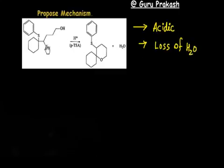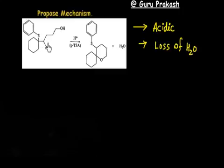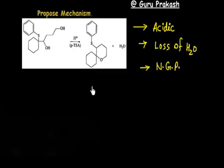Now I have two options: I can lose H₂O from here or from here. If I lose H₂O from this position, I will have basically a plus charge, and there is resonance stabilized by sulfur — that is called neighboring group participation (NGP). So this is a problem related to NGP.